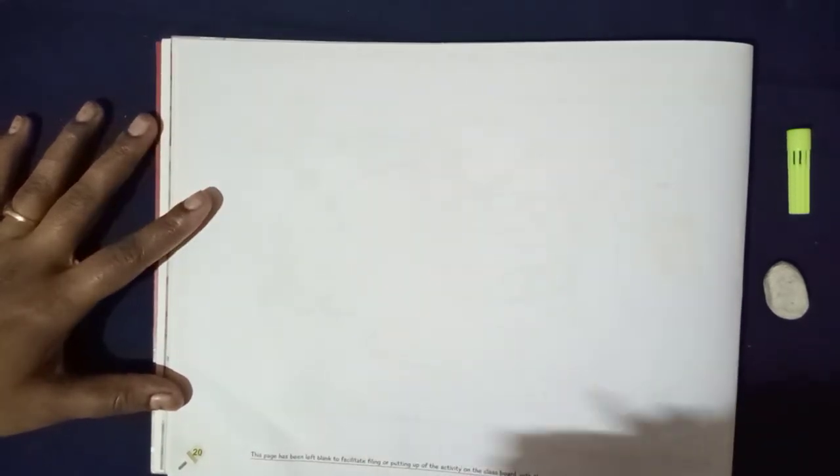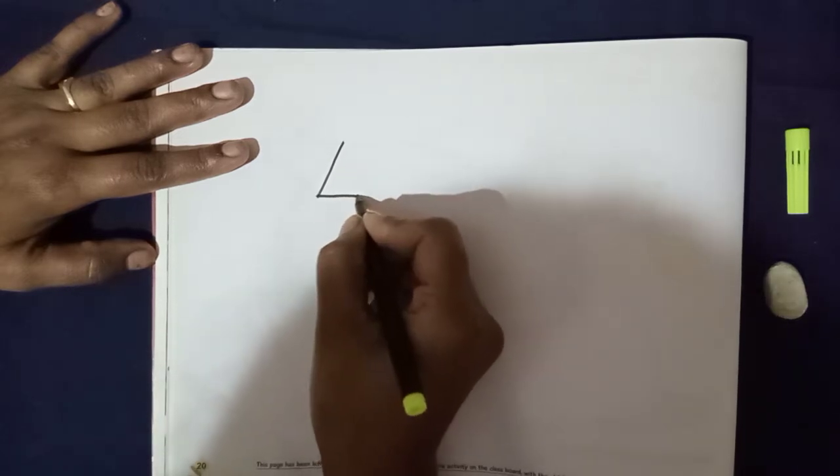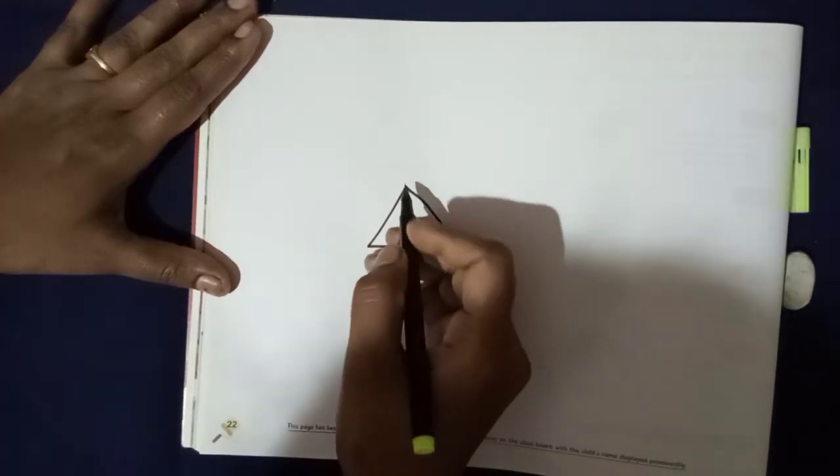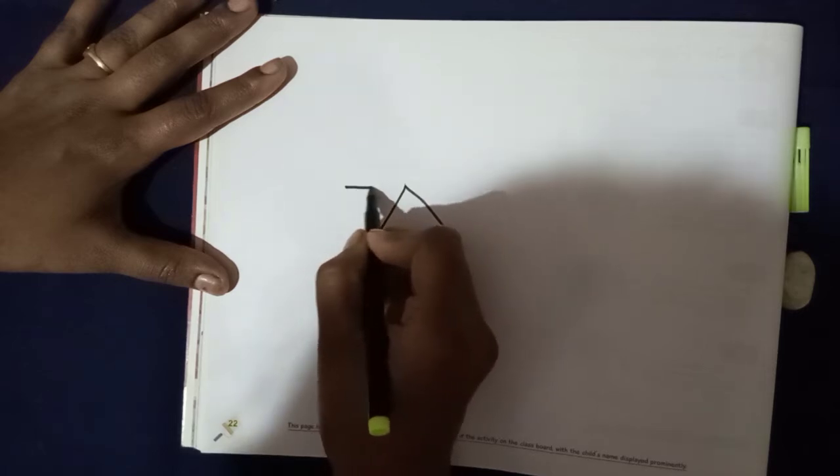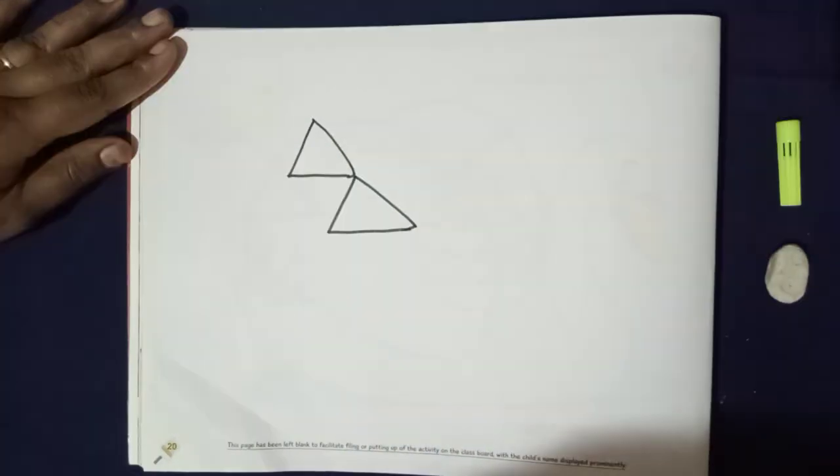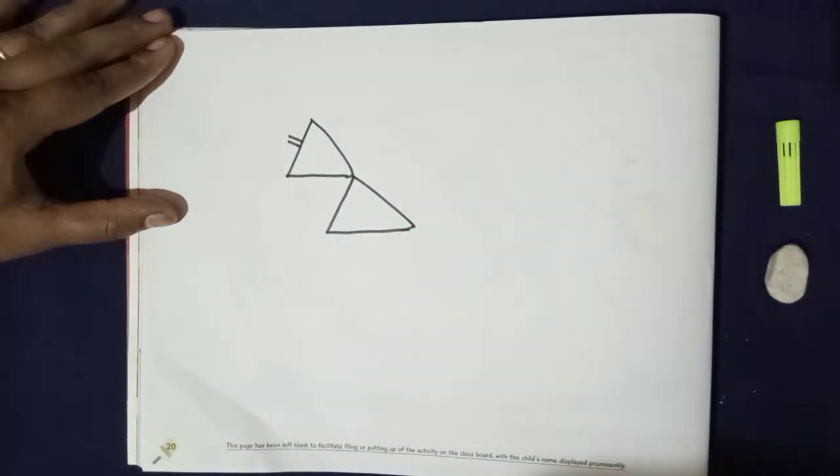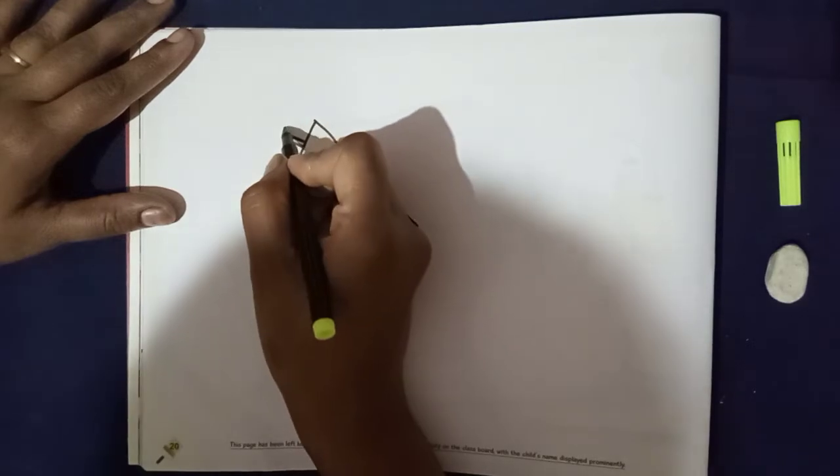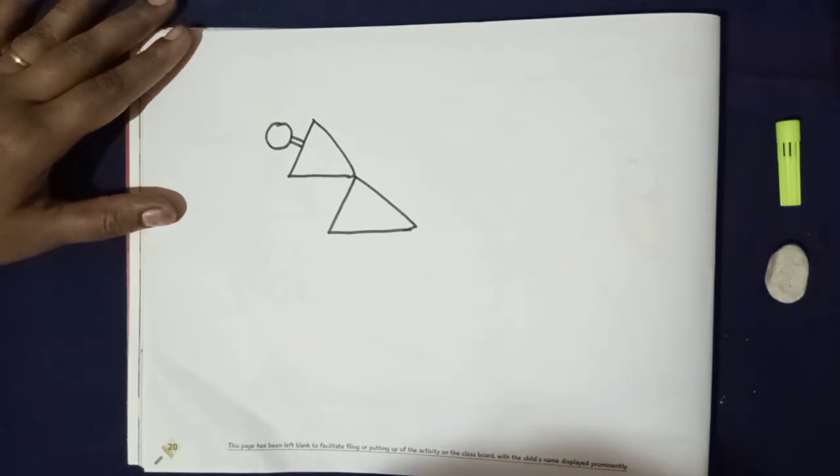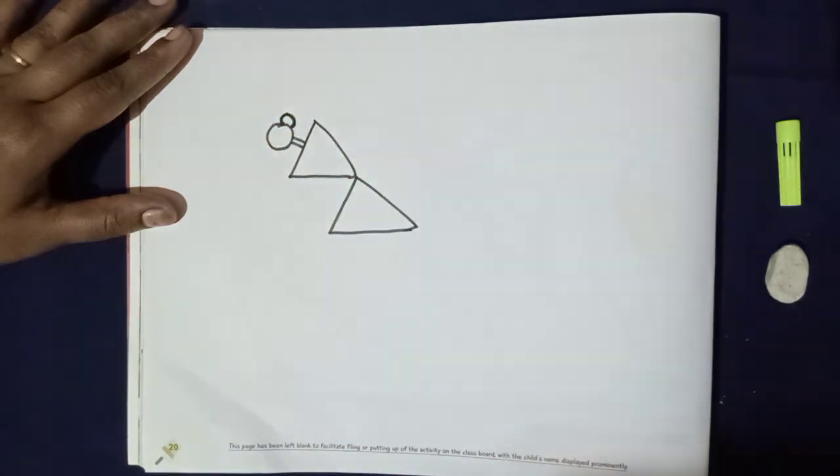Now we will draw dancing woman. First, draw triangle like this. Pehle aise triangle draw karo beta. On this triangle, we will draw one more triangle. Now draw two slanting lines. Okay children. Now one circle and here one small circle. Kyunki hum woman drawing kar rahe hai na? Girl drawing kar rahe hai.